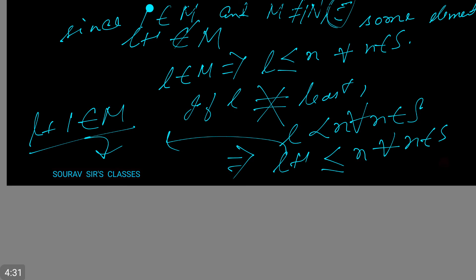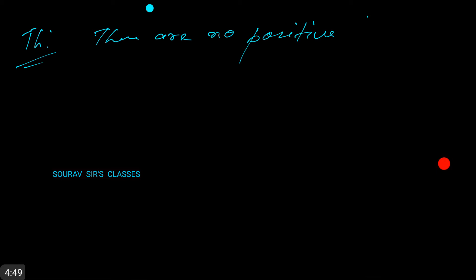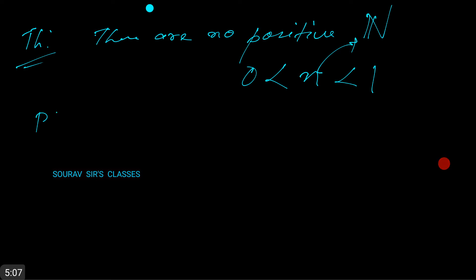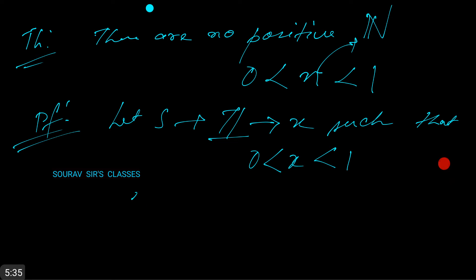So let us get to a few examples of how to use this. Suppose we are required to prove a theorem which states that there are no positive natural numbers strictly less than 1. How do we prove this? Let S be the set of integers x such that 0 is less than x which is strictly less than 1.